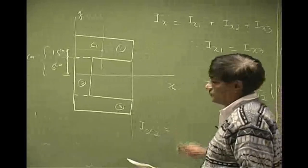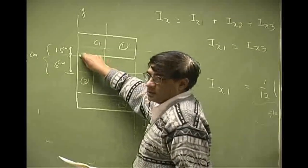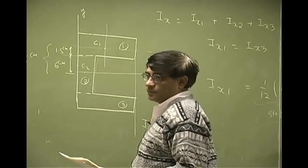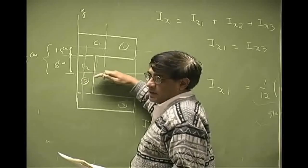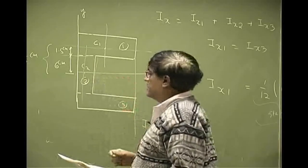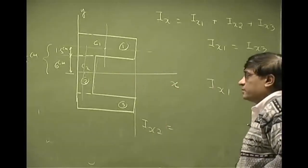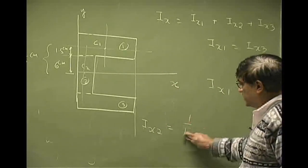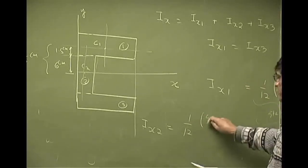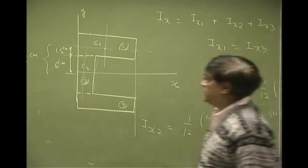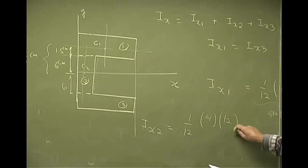Now, let us look at Ix2. We are looking at this rectangle, the centroid is at C2, which is located right at the x-axis. What I am saying is that the centroid of rectangle 2 is on x-axis. So that makes life a little simpler because this is going to be 1/12. The width is going to be 4 and the total height is 12 cubed.